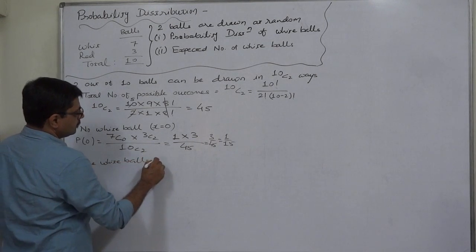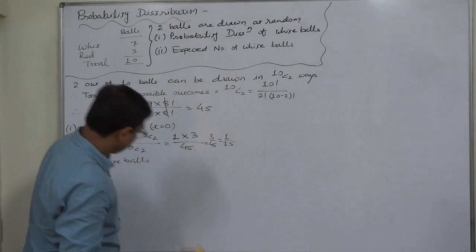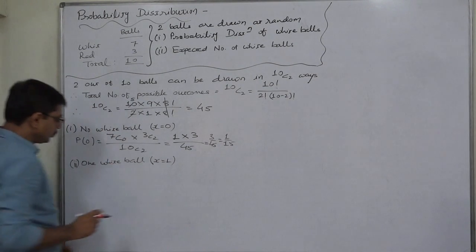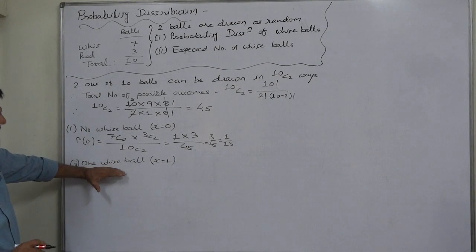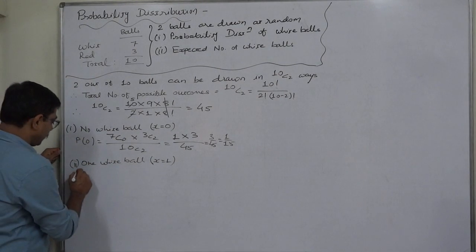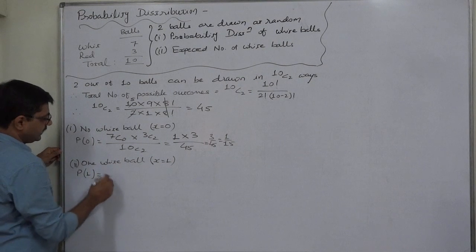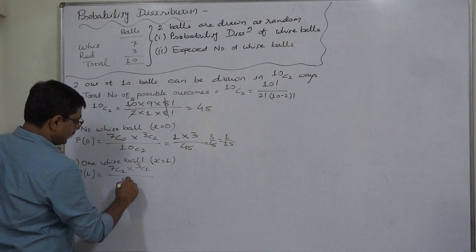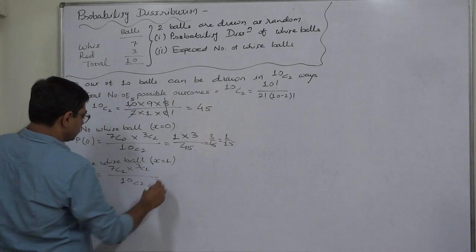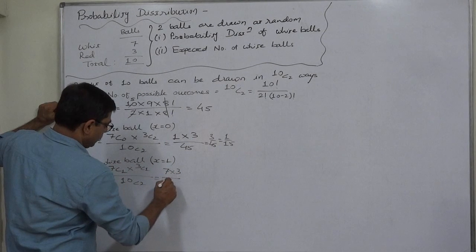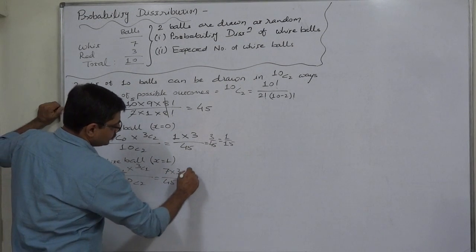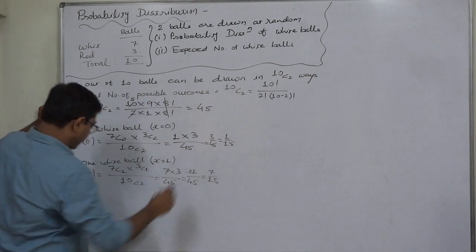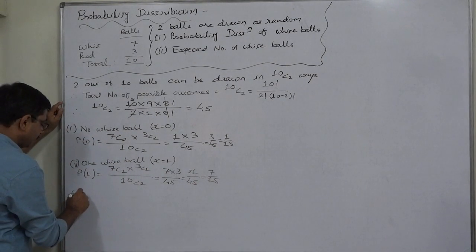The other possible outcome is one white ball is drawn. Since two balls are drawn total and only one is white, the other must be red — so the case is actually one white and one red ball. The probability of one white ball is 7C1 times 3C1 divided by 10C2, which is 7 times 3 divided by 45, giving 21/45, which simplifies to 7/15.